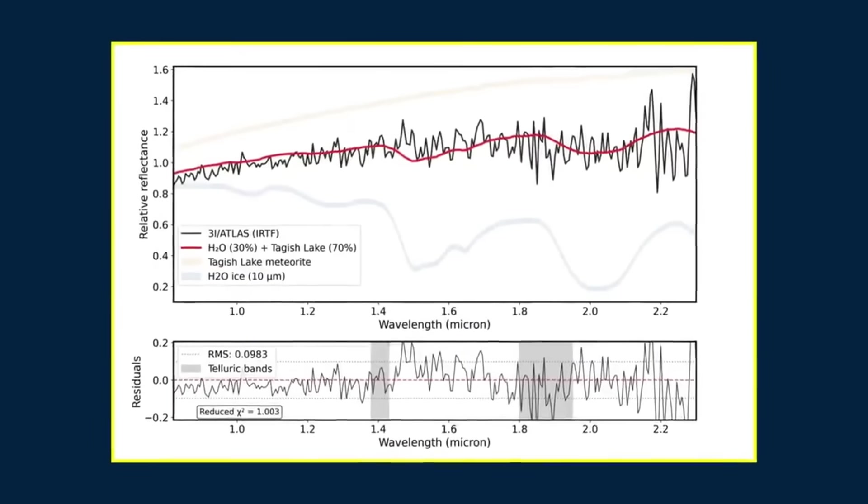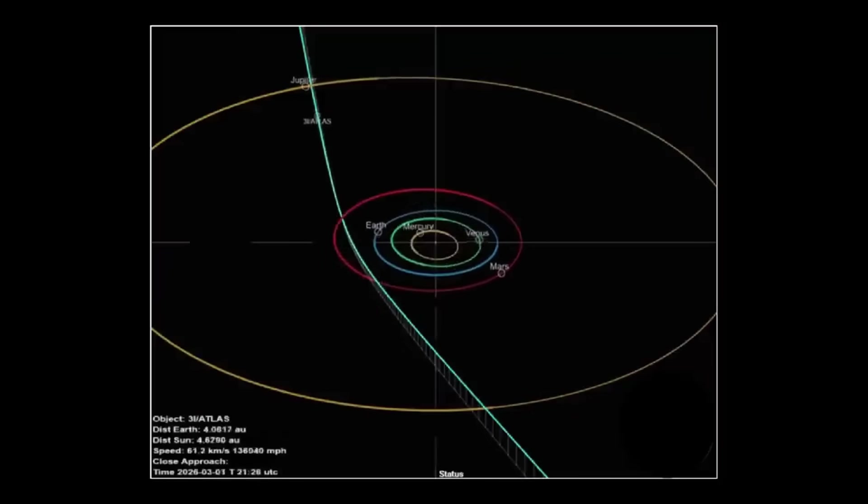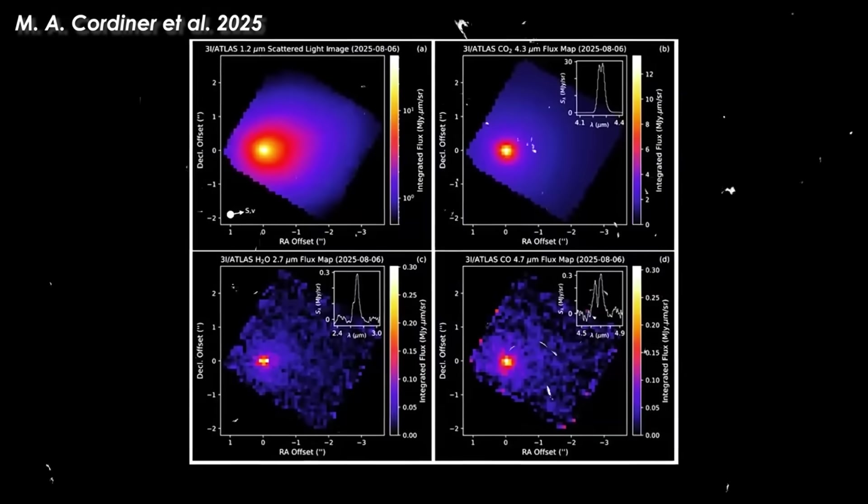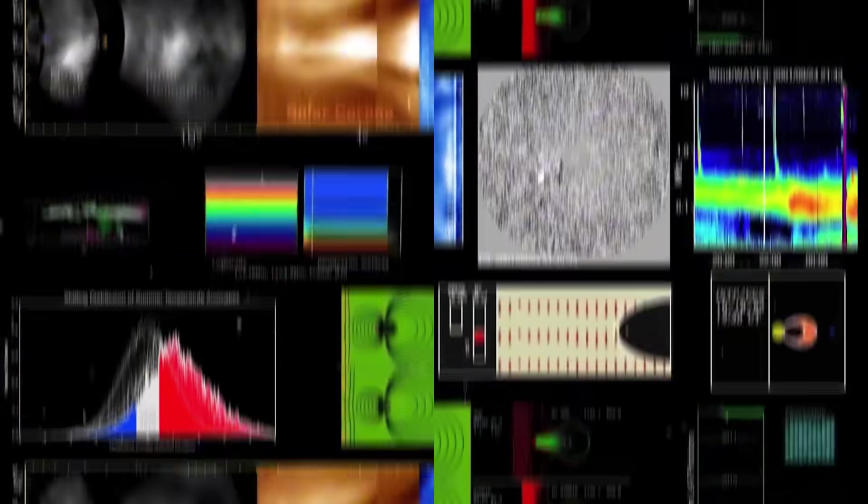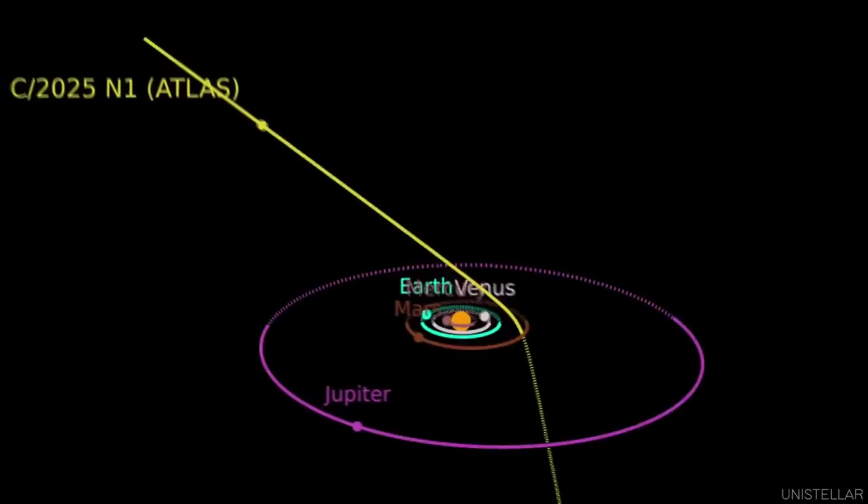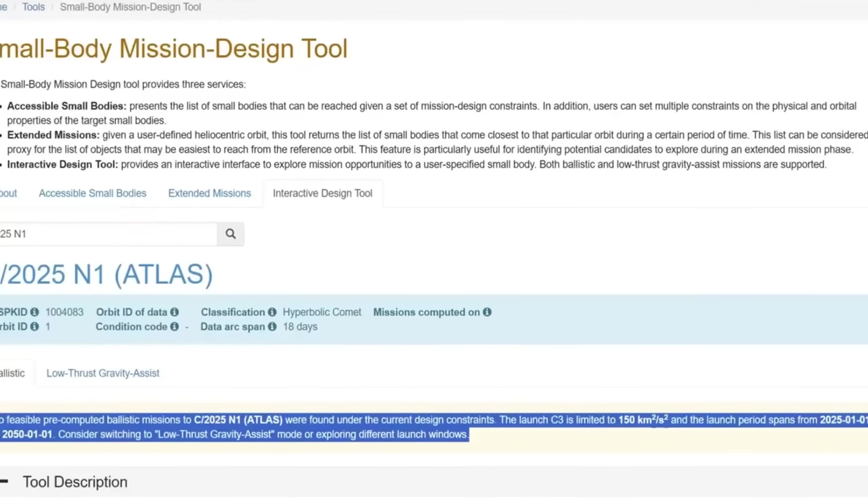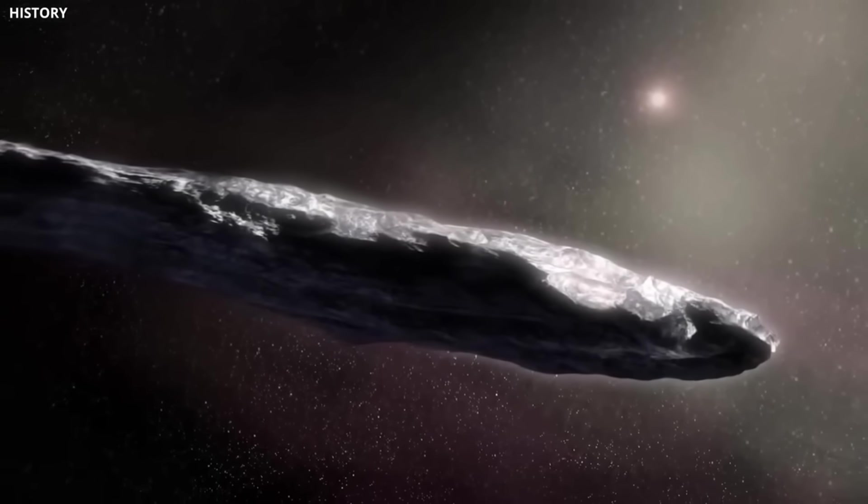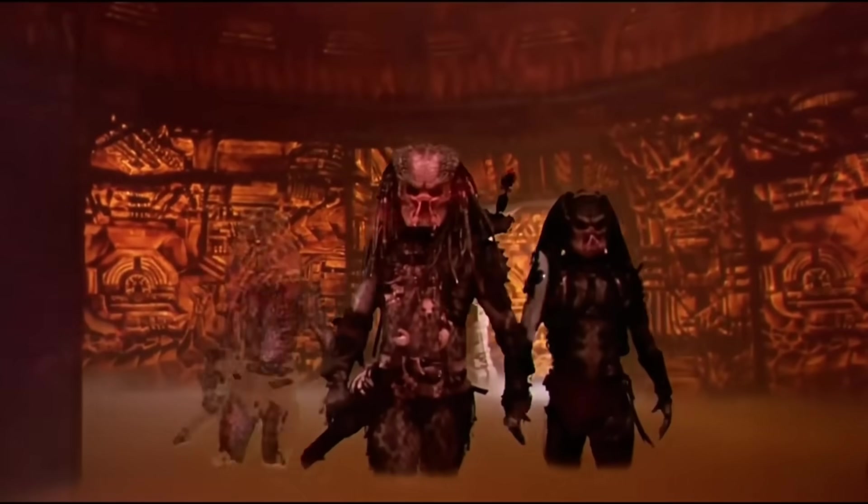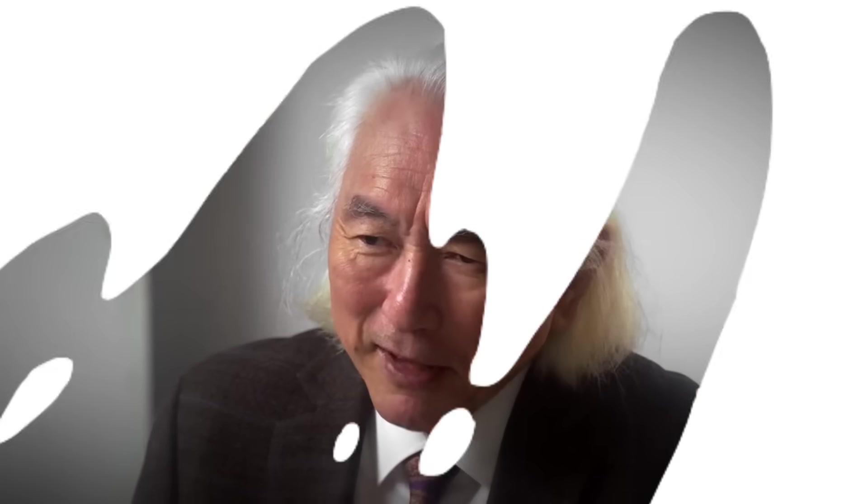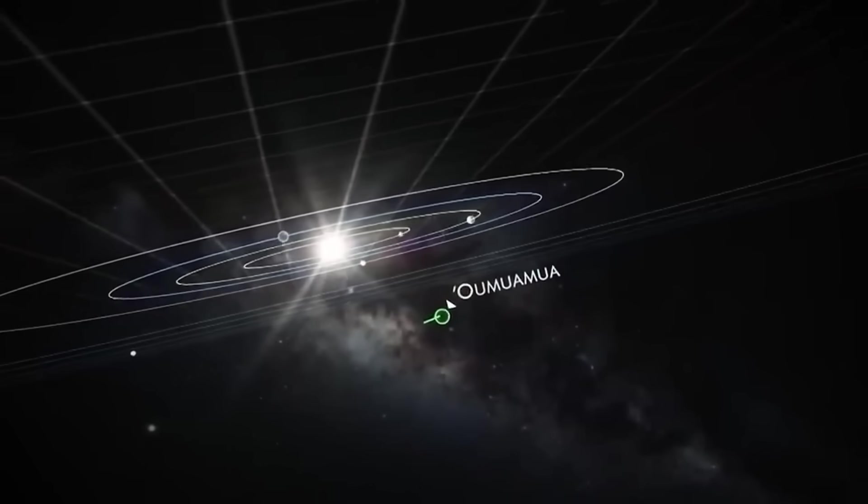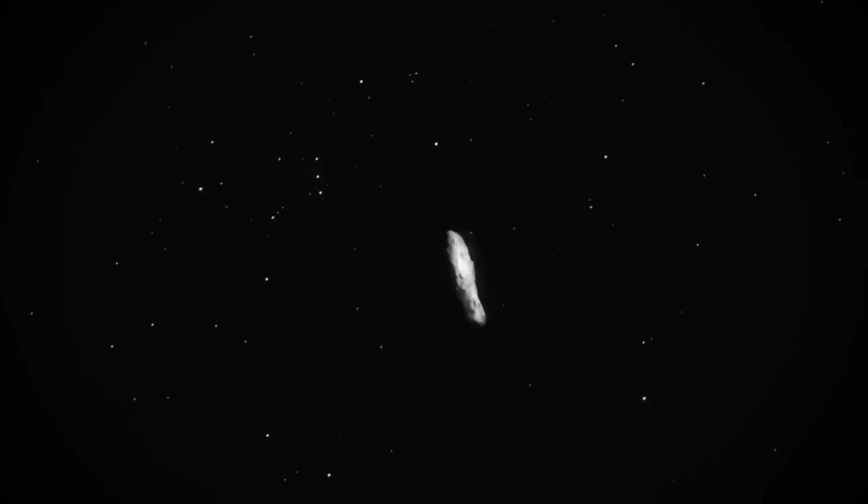Rubin Observatory will soon detect interstellar objects annually. Comet Interceptor will stand ready to chase them down. And AI-driven analysis will extract ever more insights from the data we gather. We're witnessing the birth of a new field of astronomy. The sky is no longer just stars and planets. It's highways for travelers we're only starting to notice, carrying messages from distant worlds we may never otherwise glimpse. What Oumuamua taught us is that the universe can surprise us in ways we weren't prepared for. Its peculiarities forced astronomers to stretch existing theories or consider entirely new ones. That intellectual flexibility, the willingness to follow evidence wherever it leads, is science at its best. Whether these objects are natural messengers shaped by processes we're still learning about, or something more extraordinary, they remind us that we are not alone in this galaxy's story. Other star systems are reaching out to us, one fragment at a time.